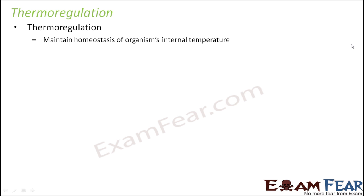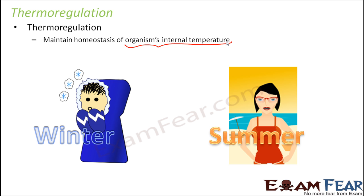When we talk about thermoregulation, it is all about maintaining the organism's internal temperature. It doesn't matter if it is winter when the temperature outside is very low — our body is still able to maintain a constant internal temperature, which is somewhere in the range of 34 to 40 degrees Celsius. Our internal temperature will always lie within this range.